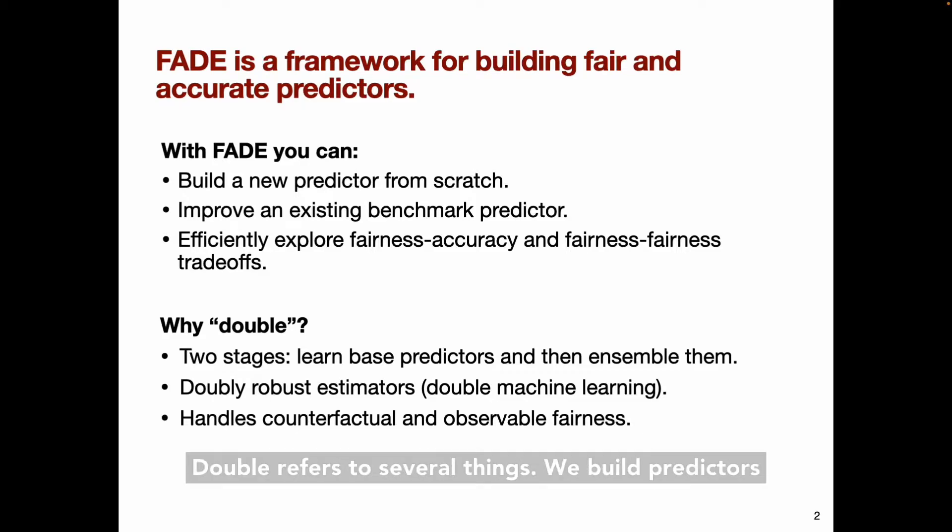Double here refers to several things. We build predictors in two stages, first learning a set of base predictors and then ensembling them. We also use doubly robust estimators, which appear in the literature as well under the heading Double Machine Learning. And finally, we handle both counterfactual and observable fairness criteria.